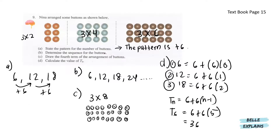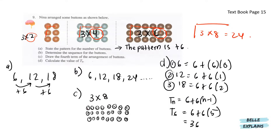Next, determine the sequence for the buttons. The sequence is 6, 12, 18, 24 and so on. Draw the fourth term of the arrangement of buttons. You can see it's 3 by 2, 3 by 4, 3 by 6, which means the next pattern will be 3 by 8. Since here is 2, 4, 6, here will be 8. This will give us 24.